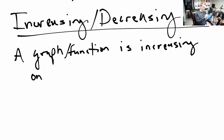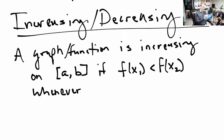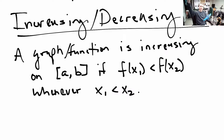A function is increasing on an interval a to b — these are x values — if whenever x1 is less than x2, then f(x1) is less than f(x2). So your graph is increasing if you plug in a small number and you plug in a big number, and the bigger number gives you a bigger output than the smaller input does.